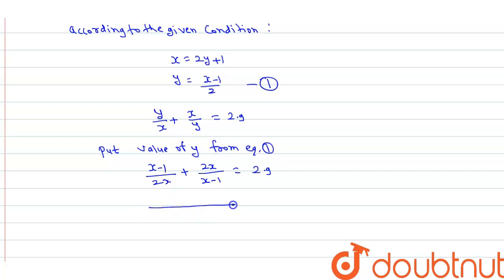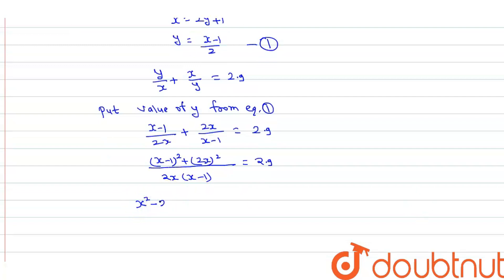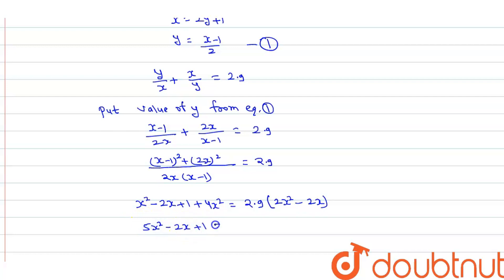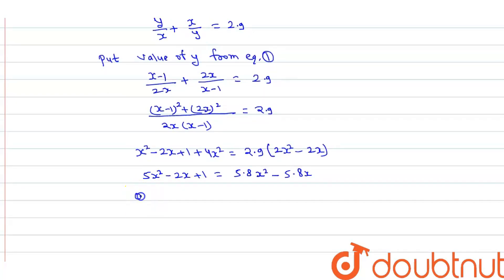So this will be: (x minus 1) / 2x plus 2x / (x minus 1) equal to 2.9. Solving this, we get x squared minus 2x plus 1 plus 4x squared equal to 2.9 times (2x squared minus 2x). This gives 5x squared minus 2x plus 1 equal to 5.8x squared minus 5.8x, which simplifies to 0.8x squared minus 3.8x minus 1 equal to 0.